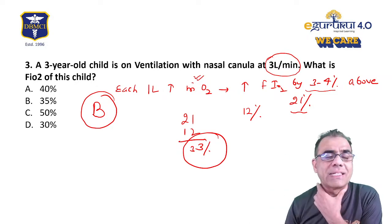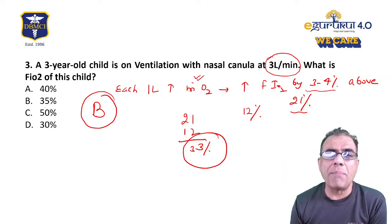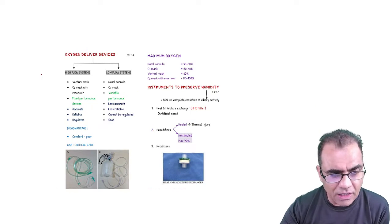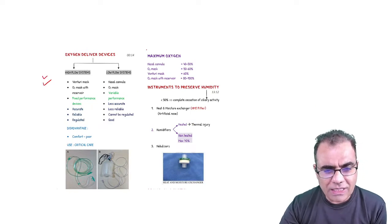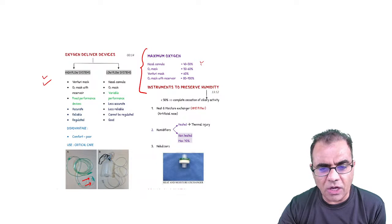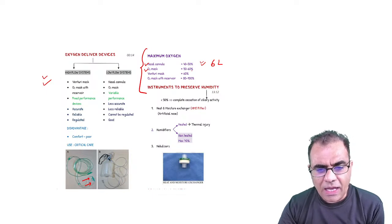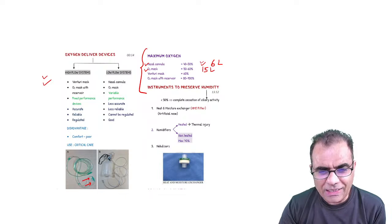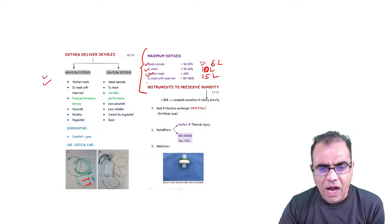Also important: the maximum oxygen delivered by each oxygen delivery device. With nasal cannula, maximum is around 40 to 50%, occurring at 6 liters. With simple oxygen mask, 50 to 60% at 10 liters. With venturi mask, 60% at 15 liters. With oxygen mask with reservoir, you can give up to 80% at 15 liters.